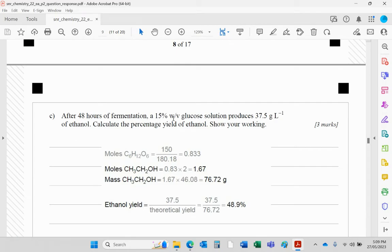After 48 hours, there's a 15% weight-by-volume glucose solution that's produced 37.5 grams per liter of ethanol. Calculate the percentage yield of ethanol. Show your working. So what have we got? The moles, let's have a look. I've just looked at the timer. I'm about to run out of time. These timings, a maximum of 15 minutes. So I'm going to do this in the next video, a part two.